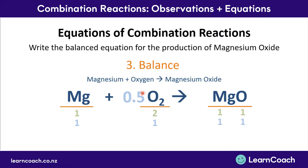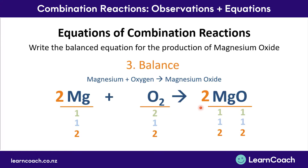However, in chemistry we don't like to use half numbers — we work with whole numbers. Since the equation is already balanced, we can multiply everything on both sides by two, similar to algebra. This gives us 2Mg plus O₂ produces 2MgO. We now have two magnesium atoms and two oxygen atoms on the reactant side, and two magnesium atoms and two oxygen atoms on the product side — a completely balanced equation with whole numbers.